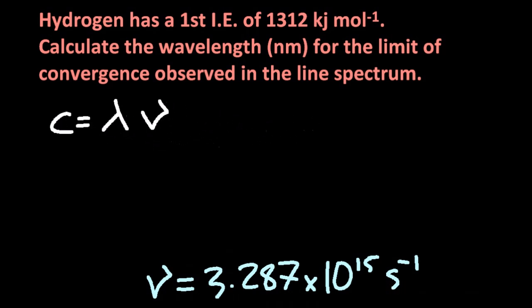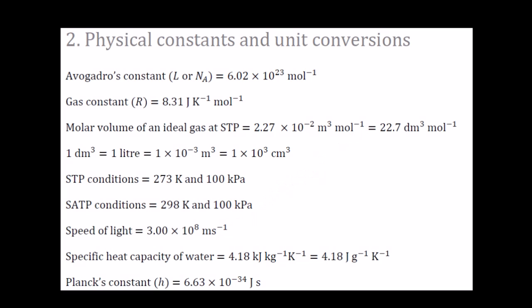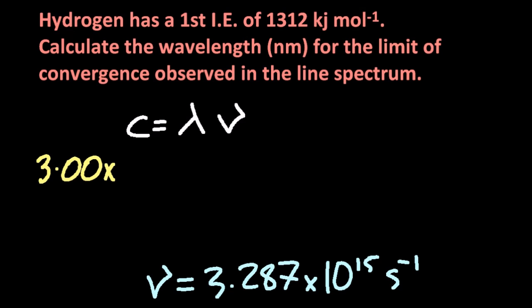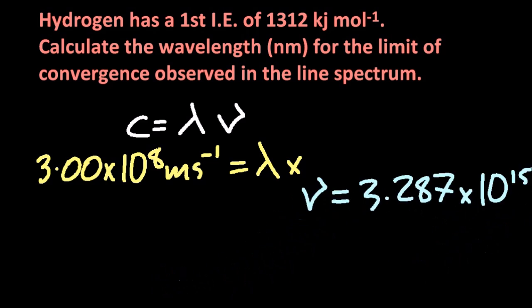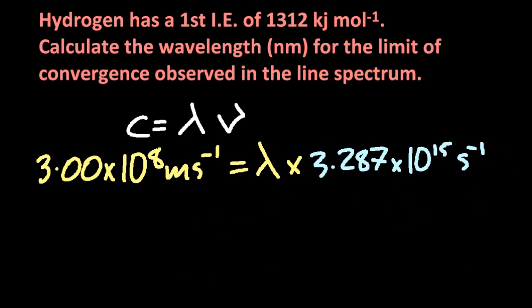Now let's put the frequency into the wavelength equation. The speed of light, C, is also given in table 2 — it's not labeled as C explicitly, but C is the speed of light. By substituting our calculated frequency, we can calculate lambda, which is the wavelength.